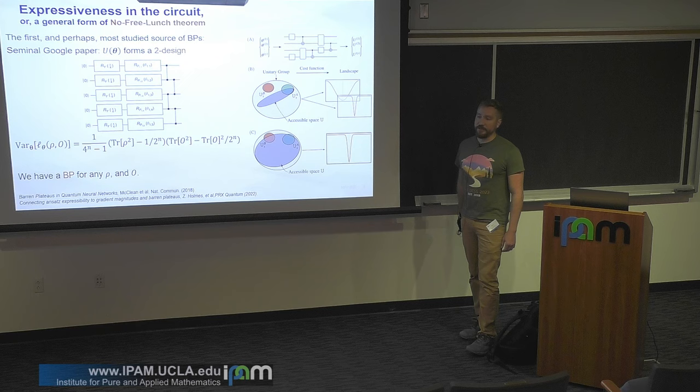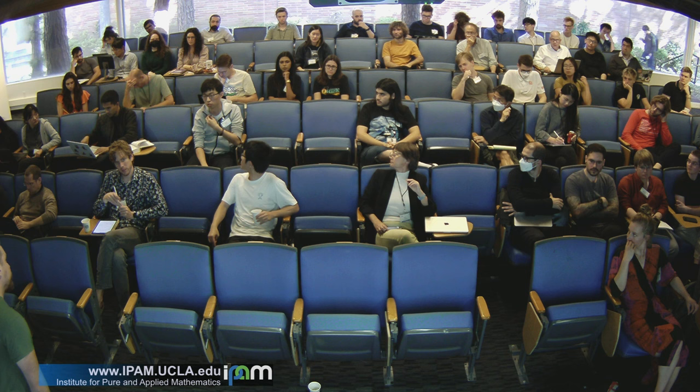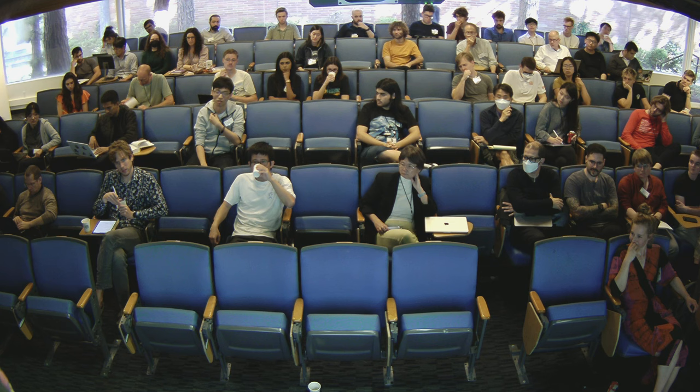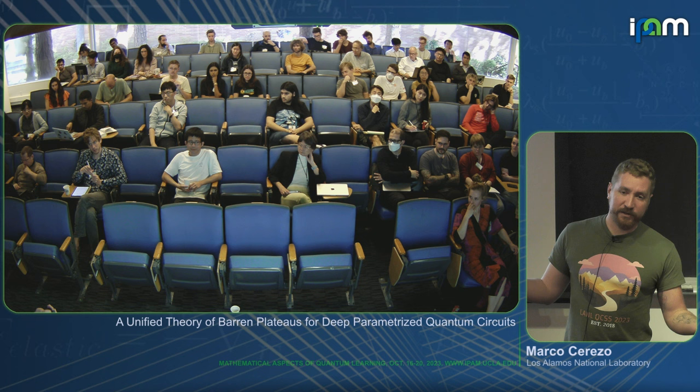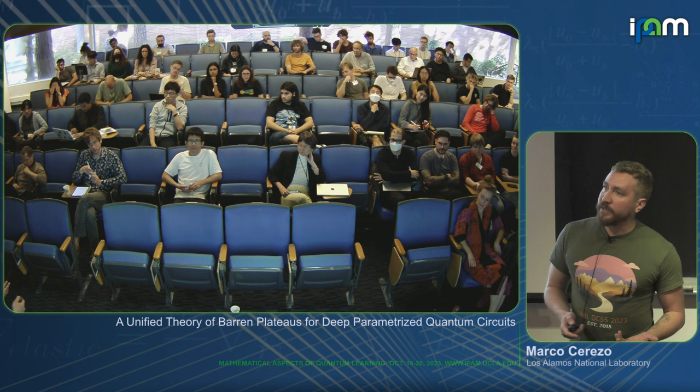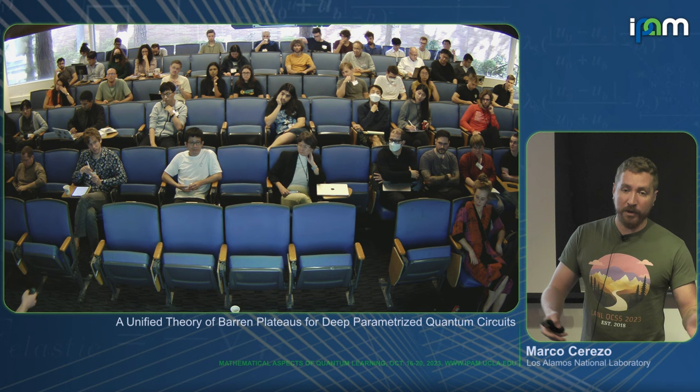Audience question: could the trace of O squared be very large if O has exponentially many Pauli terms? Answer: it depends on normalization. A projector expanded in Paulis has exponentially many terms, but is normalized, so its trace squared equals one. Most practical scenarios — VQE, QAOA measuring a polynomial number of Pauli operators, or projectors — satisfy the condition. I can't think of a reasonable algorithm where this breaks down, but I'd be interested in specific counterexamples.